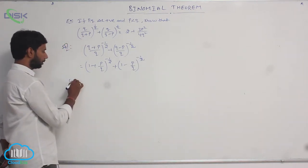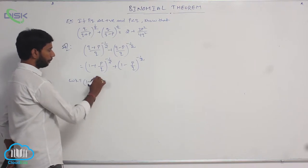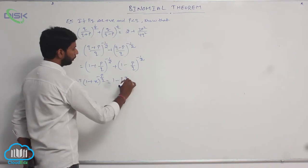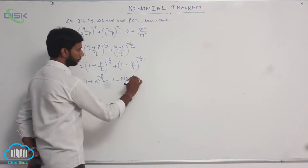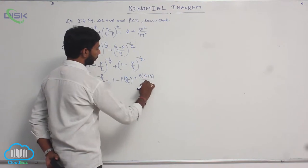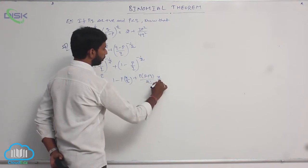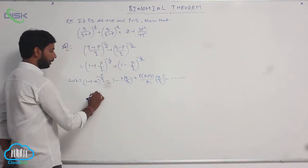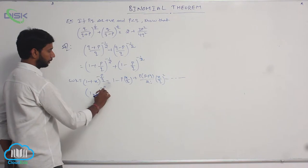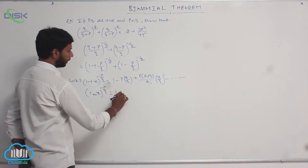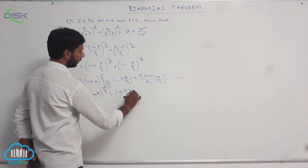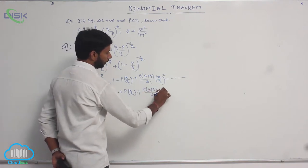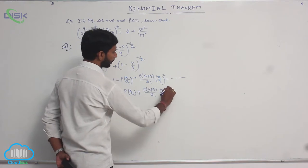We know the formulas: (1 plus X) to the power minus P/Q equals 1 minus P times X/Q plus P times (P plus Q) over 2 factorial times (X/Q) squared minus and so on. And (1 minus X) to the power minus P/Q equals 1 plus P times X/Q plus P times (P plus Q) over 2 factorial times (X/Q) squared plus and so on.